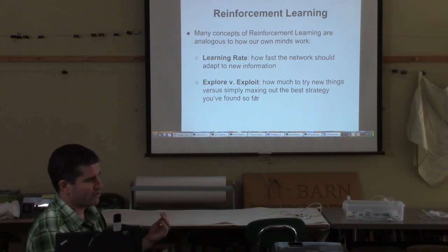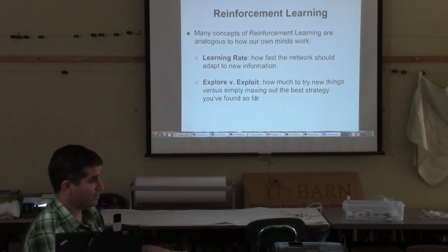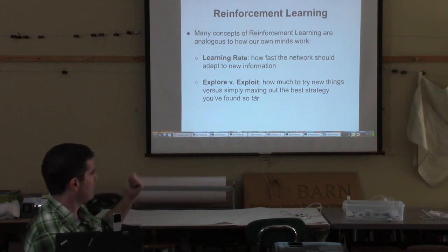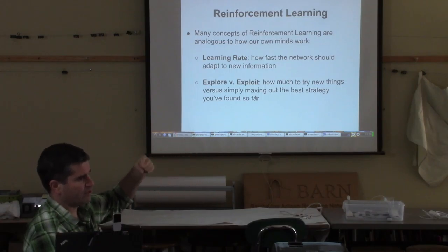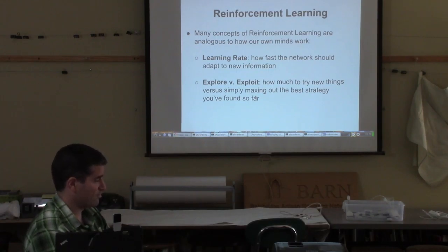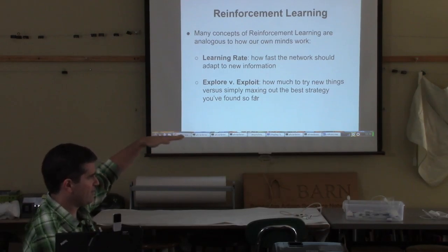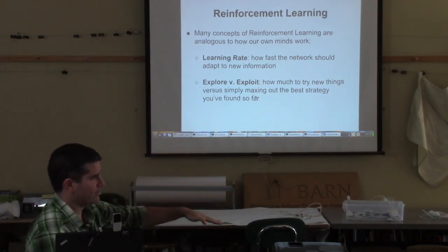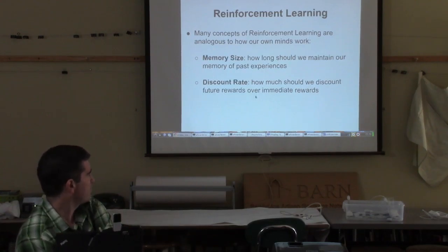The next one is called explore versus exploit. This is the amount that you want to go and try new moves that aren't necessarily what your model predicts are the best — because you might learn something — versus just wanting to max out your score and play what the model predicts every time. The risk is if you don't have enough exploration, you get caught in what's called a local minimum, meaning you're a pretty good player but you're never going to get better because the machine is not willing to experiment enough. Typically what you do over time is crank down the ratio of explore-exploit: at first it explores a lot, then as time goes on you decrease the amount of exploring and want it to play the best strategy it can.